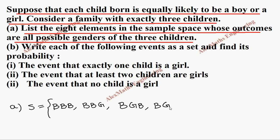Or boy girl girl, or it can be girl boy boy, or girl boy girl, or girl girl boy. And the last option is girl girl girl. So these are the eight possible outcomes. Now coming to subdivision B: write each of the following events as a set and find its probability.